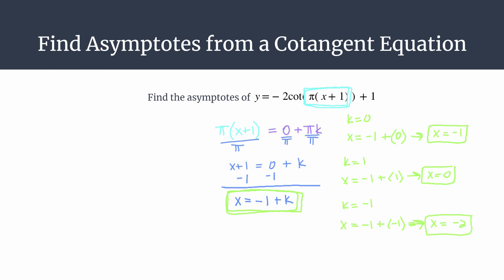Notice that these are spaced apart by one unit. So negative 1 to 0 is 1 unit, or negative 1 to negative 2. And that's because our period is actually 1. If you calculate the period for cotangent, remember it's pi divided by b. And b is this pi right here. So your period is actually 1. And that should make sense. Every asymptote for a cotangent graph happens once a period, or every 1 unit in this case.